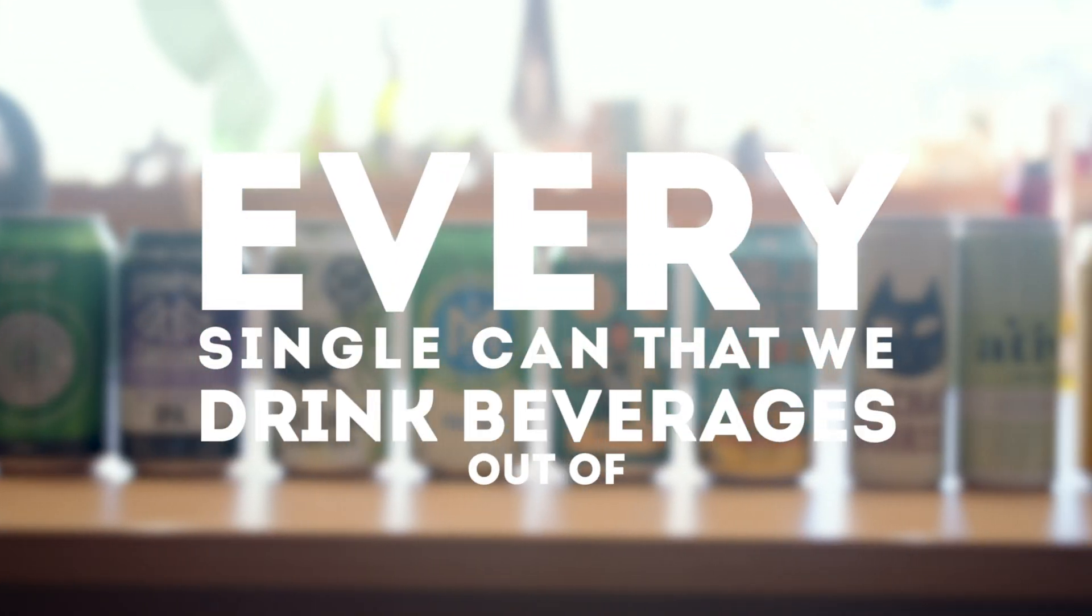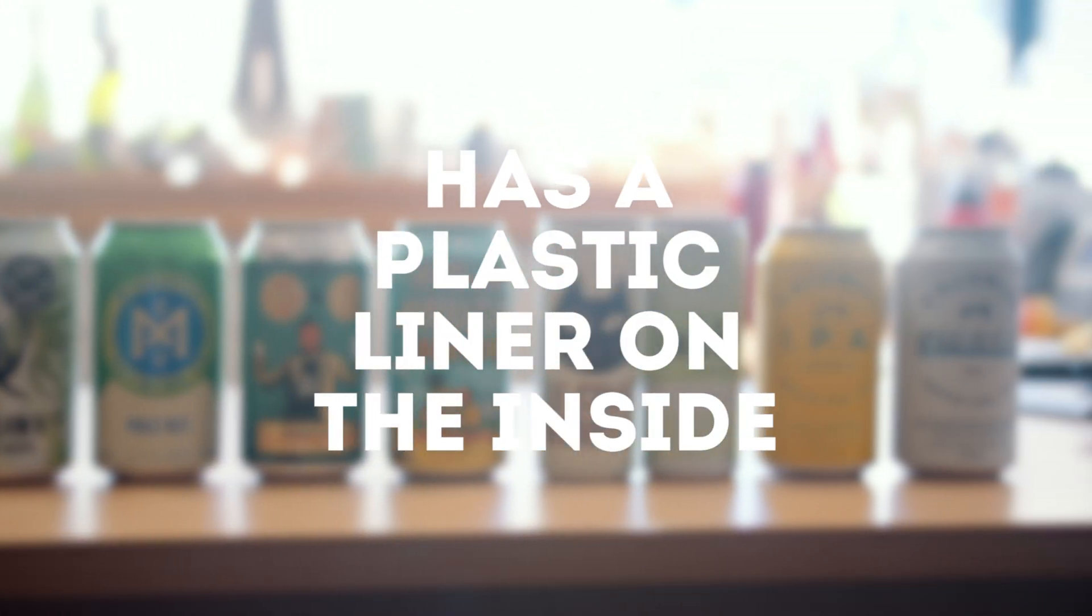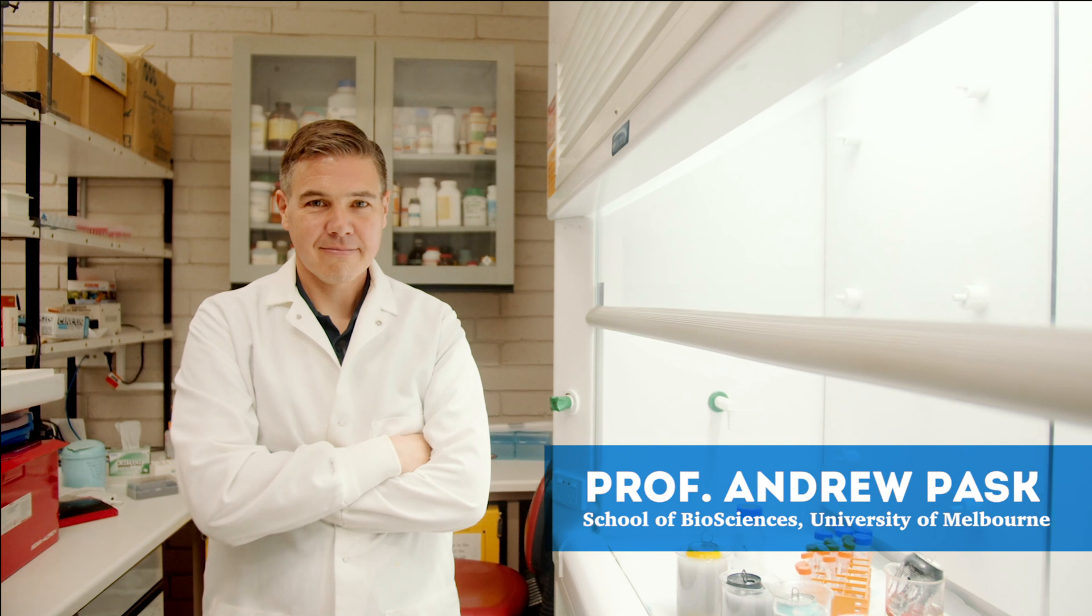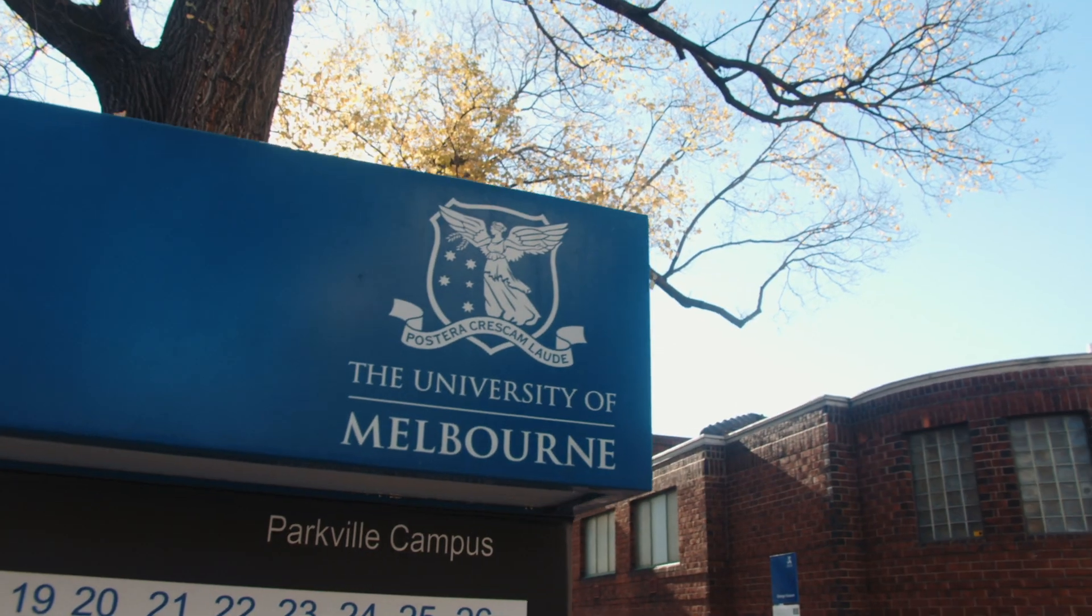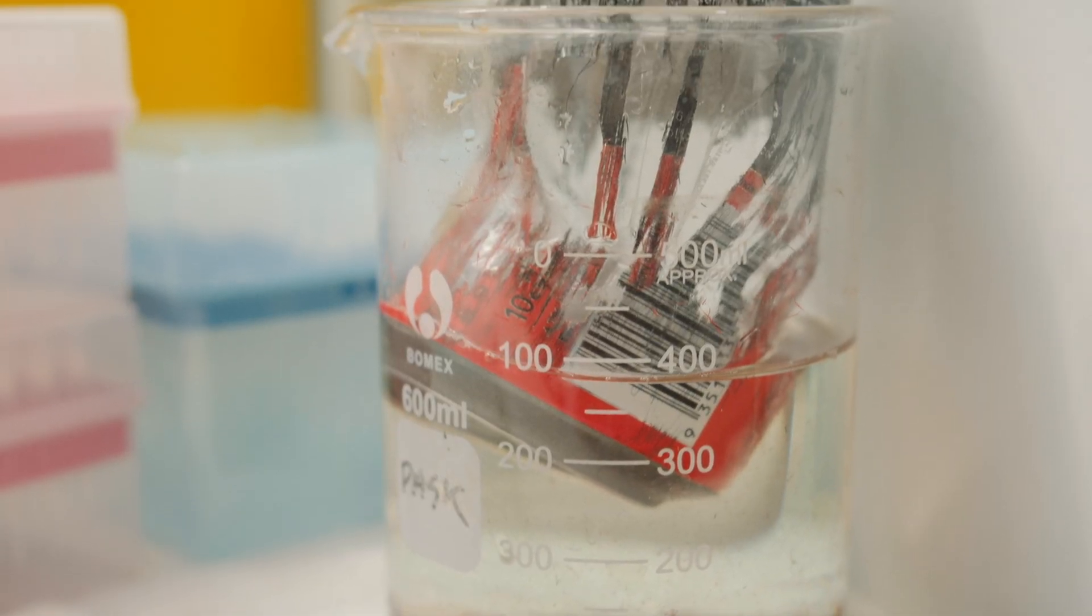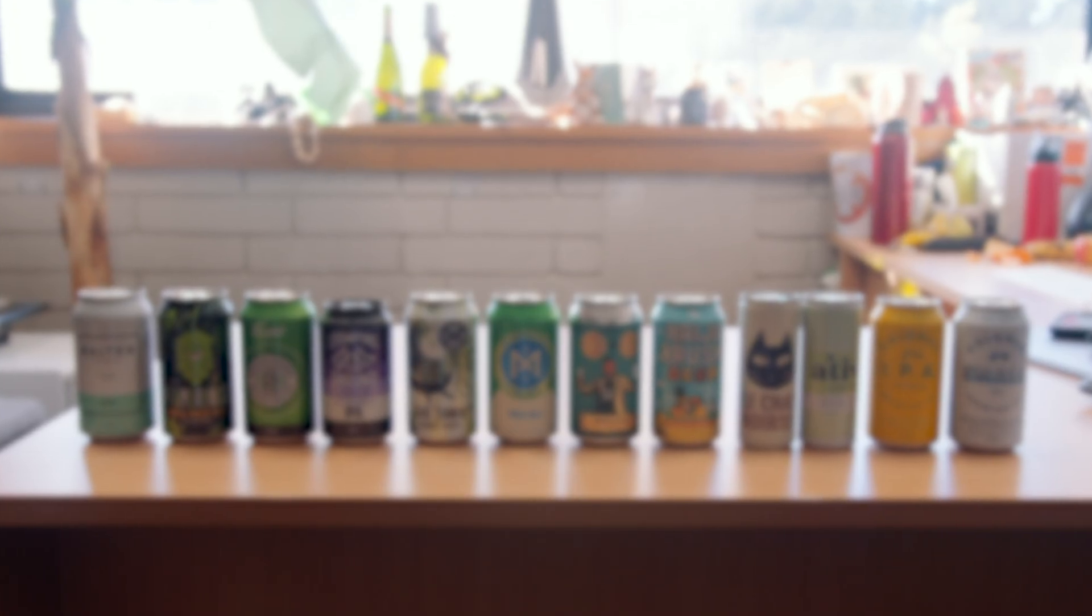Every single can that we drink beverages out of has a plastic liner on the inside, made up largely of a chemical called BPA. My name is Andrew Pask, I'm a Professor of Biosciences at the University of Melbourne, and what we're doing today is looking at what is on the inside of aluminium cans.